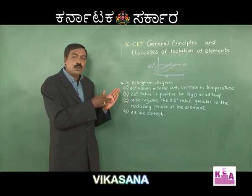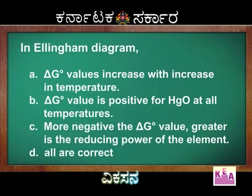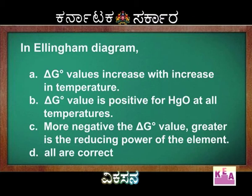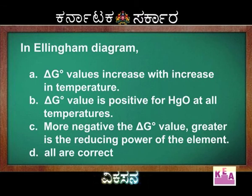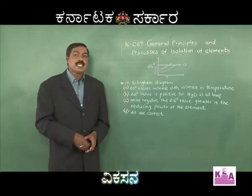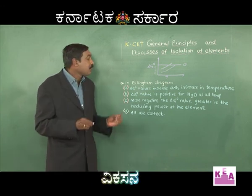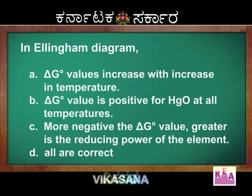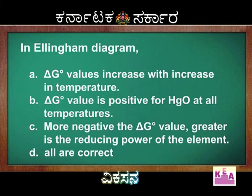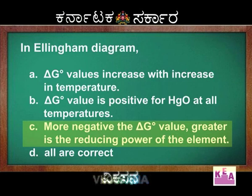Here we have the clue to attempt this question. In Ellingham's diagram, delta G-naught value increases with increase in temperature — but not at all conditions. Delta G-naught value is positive for mercury oxide at all temperatures. A negative delta G-naught value means it acts as a good reducing agent; a positive delta G-naught value means it cannot act as a reducing agent — and this depends on temperature conditions. More negative the delta G-naught value, greater is the reducing power of the element. Therefore the most appropriate answer is option C.